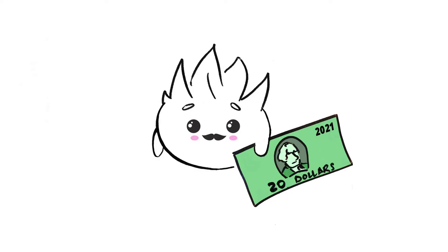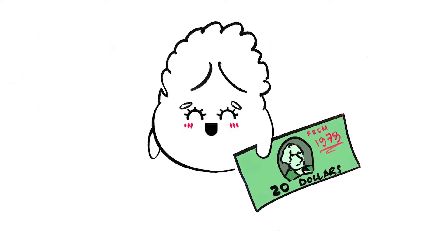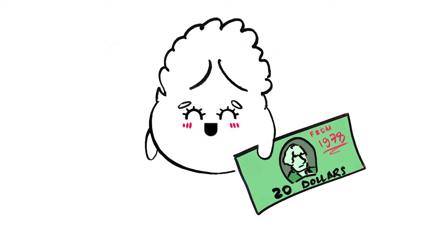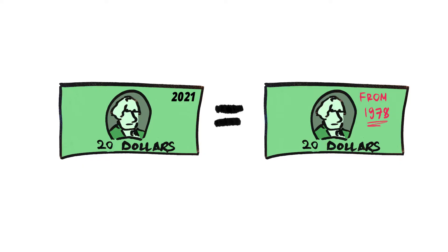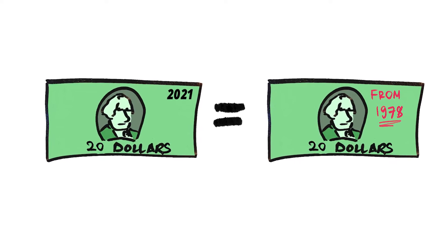One example in the real world of something that is fungible is a $20 bill. Let's pretend that you got $20 in cash from the bank, freshly printed in 2021. Likewise, let's also pretend that your grandmother gave you a gift of 20 US dollars printed in 1978. Even though both of these dollar bills are physically different, they are accepted as both $20 bills when you go to Whole Foods to buy your groceries. In this example, a dollar bill is fungible — nobody discriminates between an old and a new dollar bill.